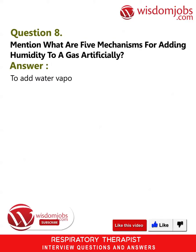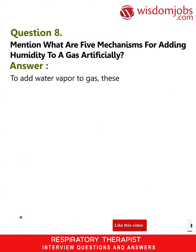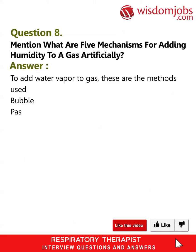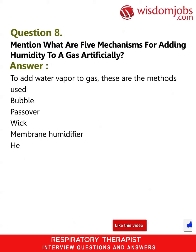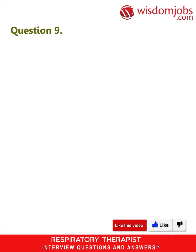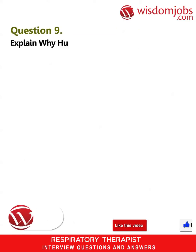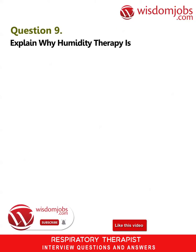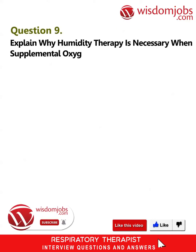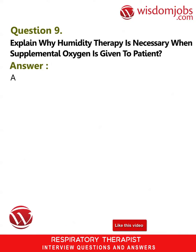Question 8: Mention what are the five mechanisms for adding humidity to a gas artificially. Answer: To add water vapor to gas, these are the methods used: bubble, pass over, wick, membrane humidifier, and heat and moisture exchanger.